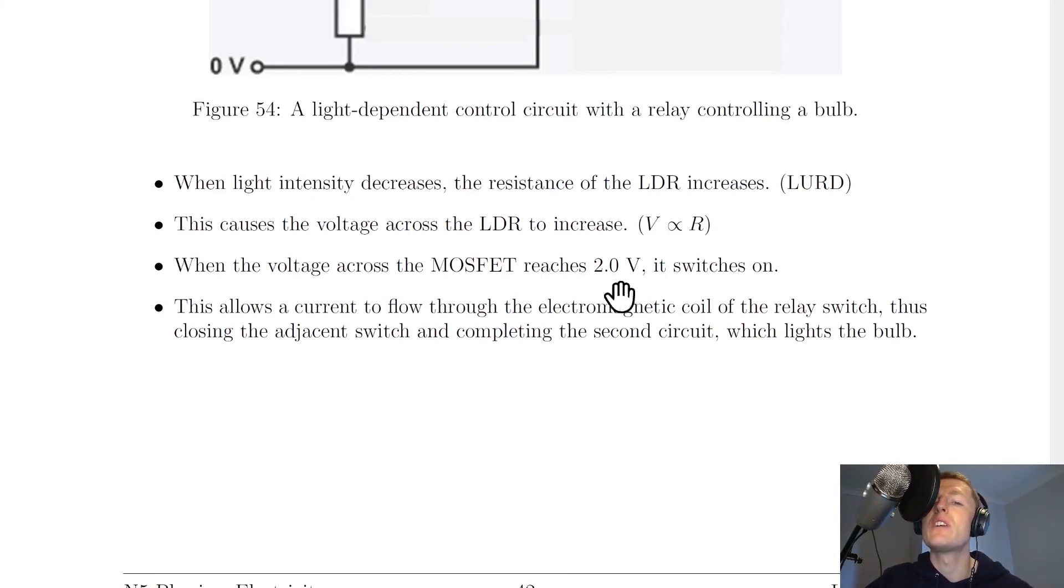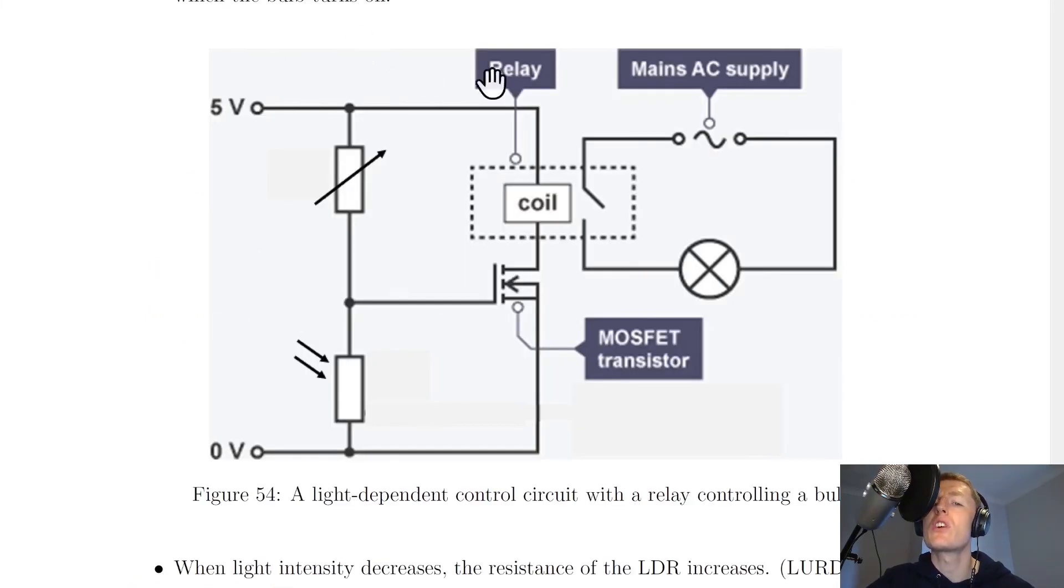So this is what it says here: when the voltage across the MOSFET reaches about two volts, it switches on. This allows a current to flow through the electromagnetic coil of the relay switch, thus closing the adjacent switch and completing the second circuit, which lights the bulb. So we have a low voltage circuit on the left powering a high voltage circuit on the right.